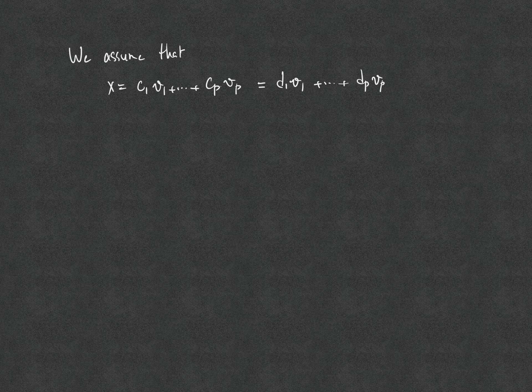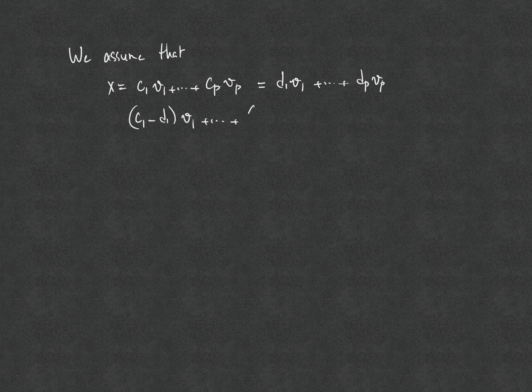We want to show that C1 equals D1, C2 equals D2, and Cp equals Dp. Taking these terms to the left-hand side and using the properties of a vector space, we have (C1 minus D1)V1 plus ... plus (Cp minus Dp)VP equals 0.